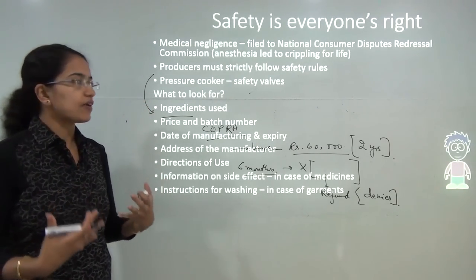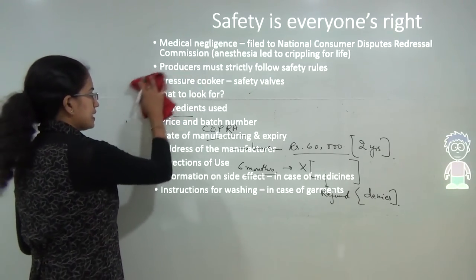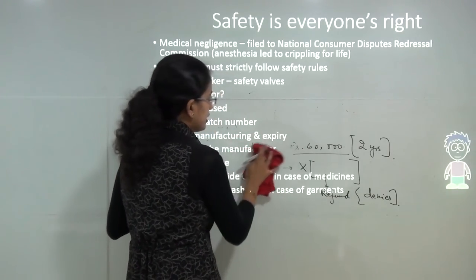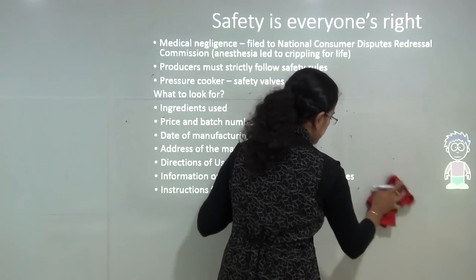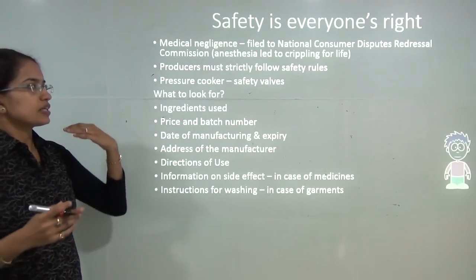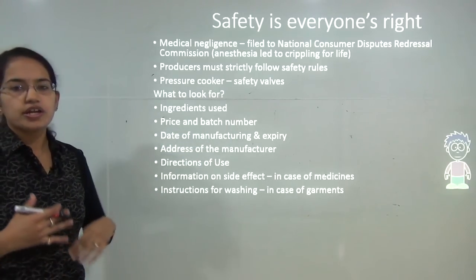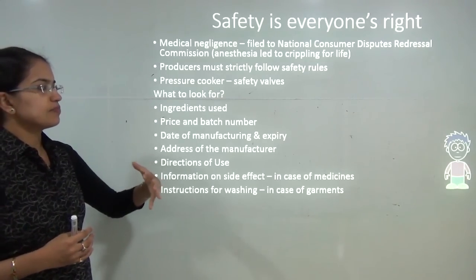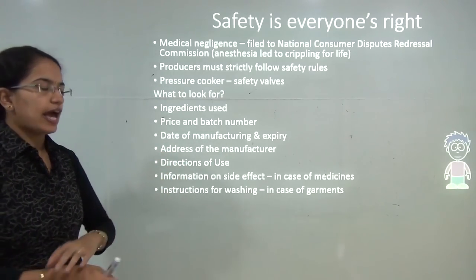Another example is medical negligence. A person was administered anesthesia and, as a side effect, suffered from crippling. The caretakers went to the National Consumer Dispute Redressal forum and asked for compensation. This is again a consumer right that comes under the COPRA Act — safety is everyone's right and producers must strictly follow safety rules.